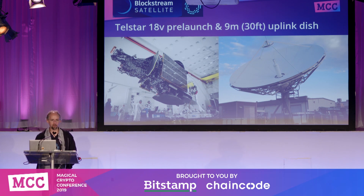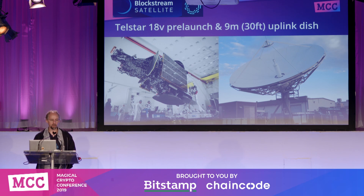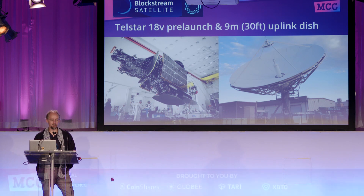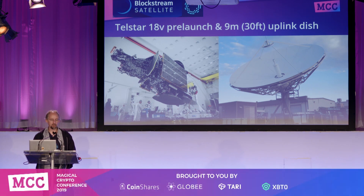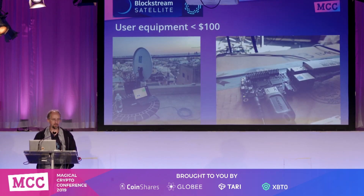What Blockstream is doing is leasing fractional bandwidth on commercial satellites that provide satellite TV service and industrial use cases. You can negotiate with them to lease bandwidth, and that's what we did — leased enough bandwidth to provide the satellite service. The uplinks are actually operated by Blockstream, and we have two uplink sites. The picture on the right is a nine meter dish, which is the uplink for the Asia Pacific region.